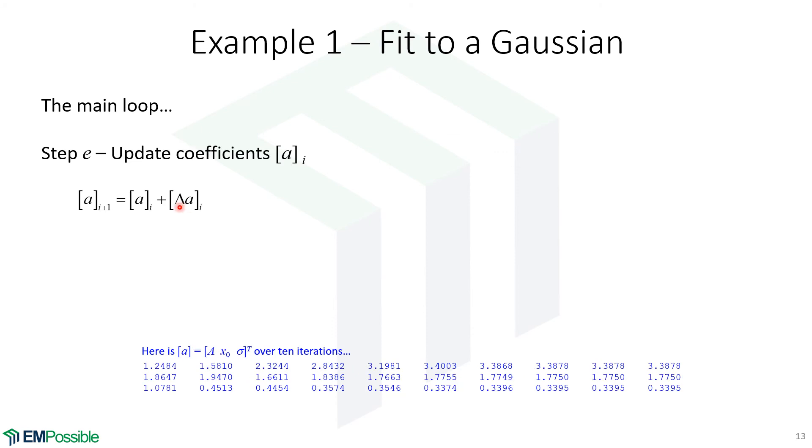What we've calculated was just how much we need to change those curve fit parameters. So now we actually need to change the curve fit parameters. The new curve fit parameters are the old curve fit parameters plus the change that we just calculated. So here we're plotting our curve fit parameters at the first iteration, second, third. And what we can see is we can watch them converge. They're really not changing much anymore between the ninth and the tenth iteration.